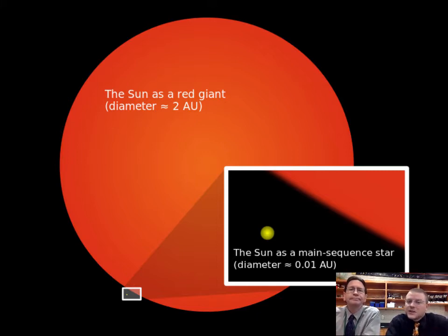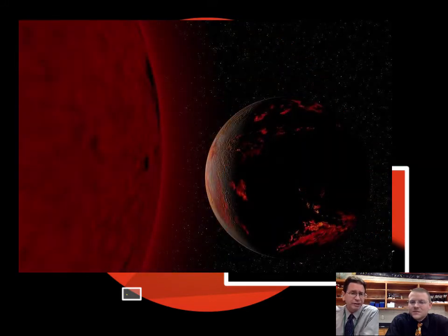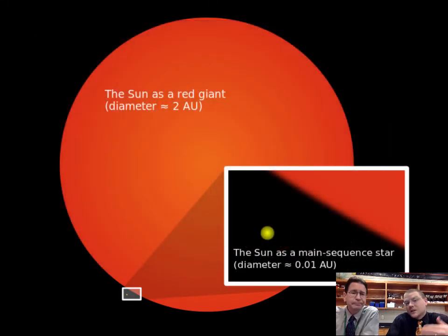So our sun starts to expand from its current size to about the size of Earth's radius. Yeah, so it will eat the inner planets, basically, as it grows into what's called a red giant. And in the process, as we have that shell burning on the outside, we also have what we call helium burning on the inside.